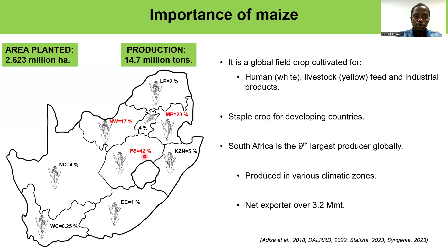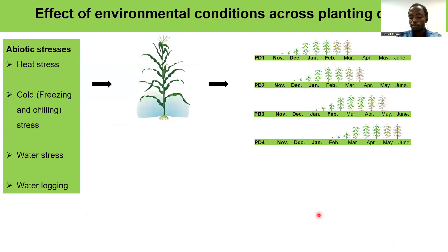There is a high concentration of maize production in Free State, North West, as well as in Mpumalanga, and these three regions contribute about 80 percent of the total yield produced per season. South Africa exports around 3.2 million metric tons. We have observed fluctuations in maize production in the past.